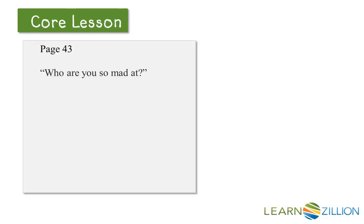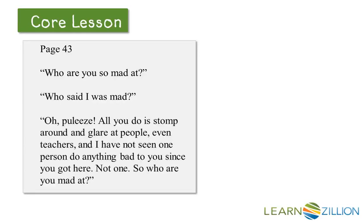On page 43, this is Diamond speaking first — I'm going to read this in my Diamond voice. 'Who are you so mad at?' This is Free: 'Who said I was mad?' Diamond again: 'Oh, please. All you do is stomp around and glare at people, even teachers. And I have not seen one person do anything bad to you since you got here. Not one. So, who are you so mad at?'